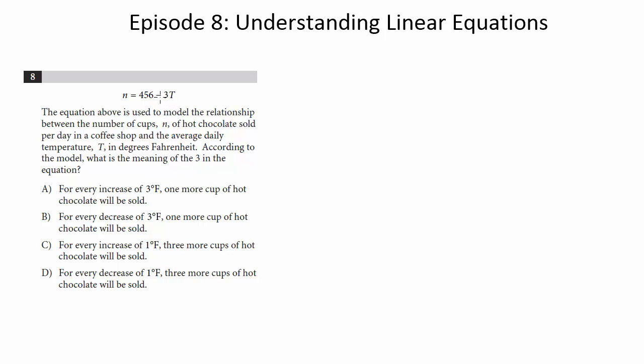First thing I want to do is rearrange this to get this looking closer to a different form. So I'm just going to make this n equals negative 3T plus 456. And the reason why I wanted to do that is I want this to look like y equals mx plus b. So think about for a second what each of these values represents in the y equals mx plus b form, and then what it would represent in this real-life scenario.